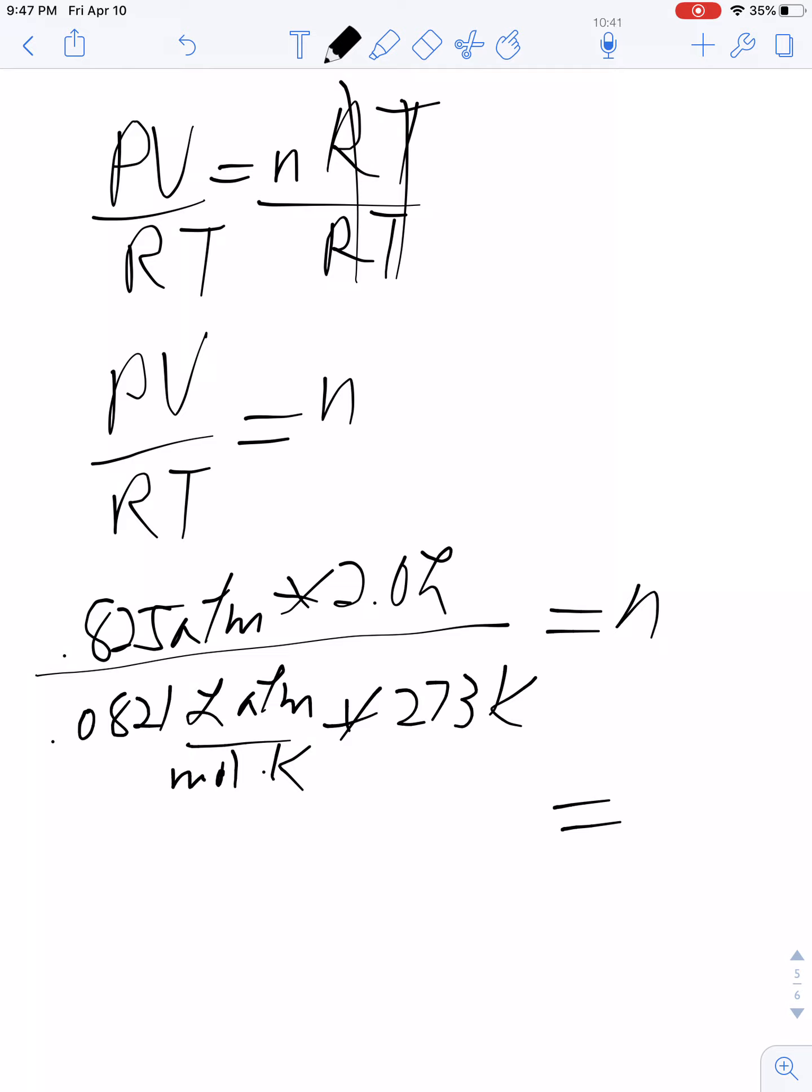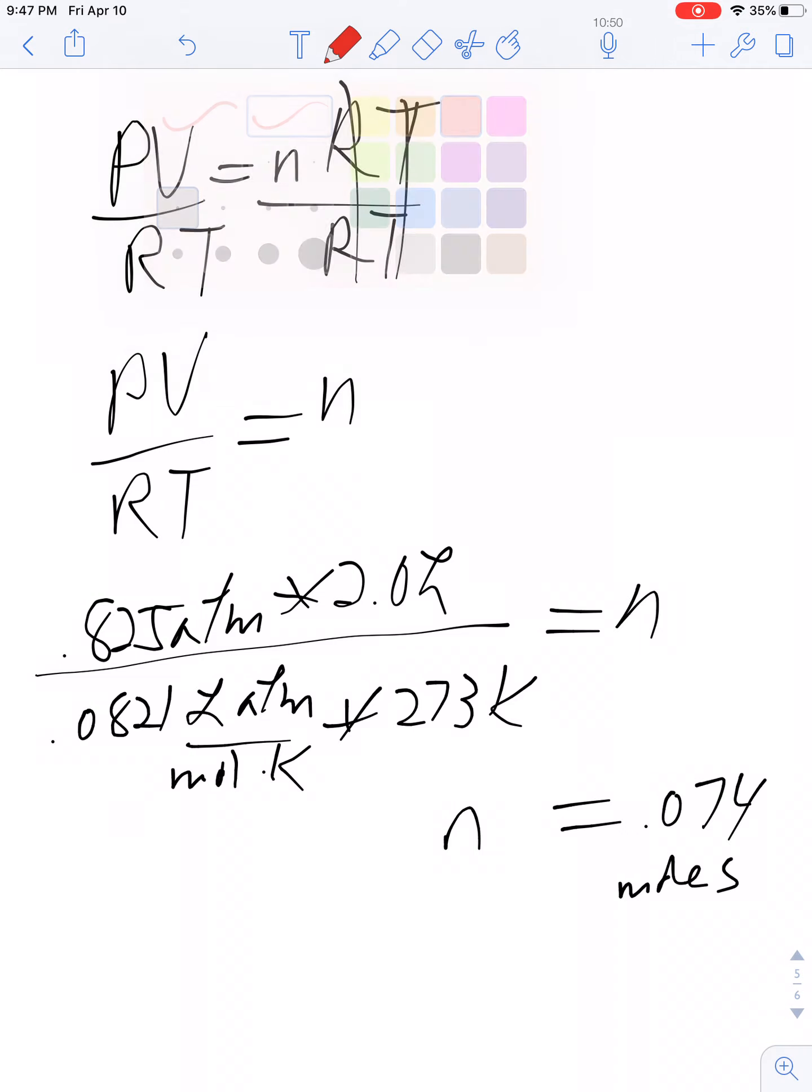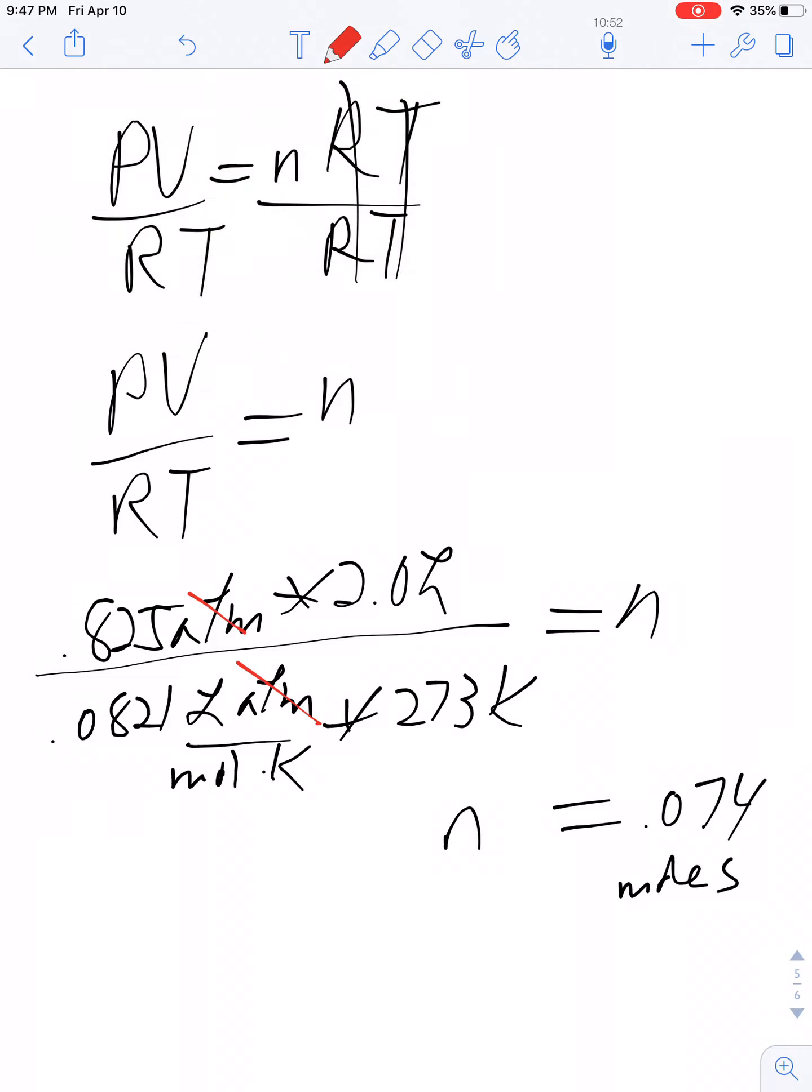With 2 sig figs, I get 0.074 moles. The units cancel: atm with atm, liters with liters, Kelvin with Kelvin. The only unit left is moles: 0.074 moles.